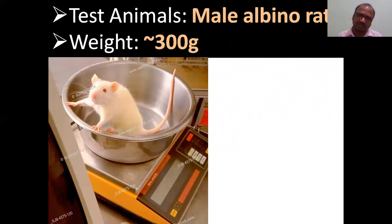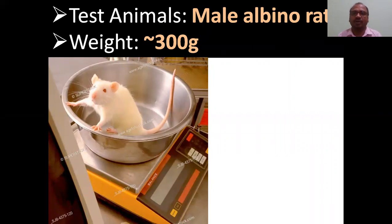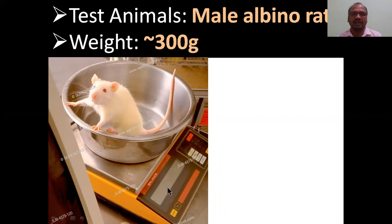The test animal is always male, because BP can be checked more easily in males. The animal is an albino rat — albino means white, a pure white rat. The weight is around 300 grams; approximately 250–300 grams.